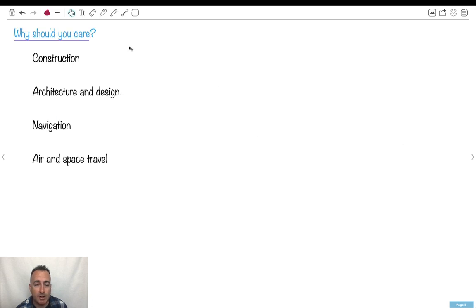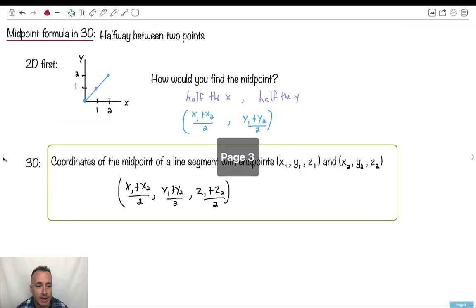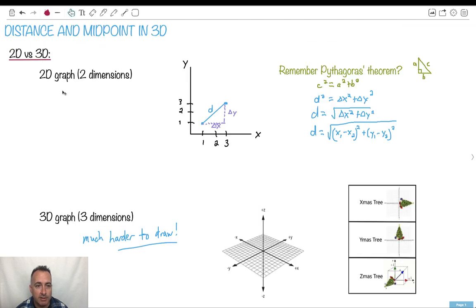Now, why should you care about this? Well, this is helpful in everyday life, depending on what you're doing as a job, at least. If you have to build something, it helps to know distances in 3D. Architects, designers, we use this and navigation. So if you're going to actually get to know where you're going, you have to know about distances, air travel, space travel, all sorts of stuff. So this can actually be important to you in everyday life. Otherwise, it's good to learn because you have a new test.